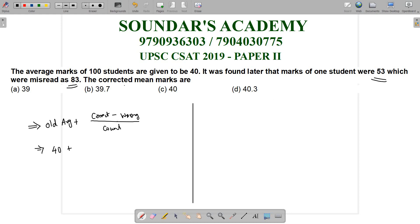40 plus 53 minus 83 divided by 100. 40 minus 0.3 is the answer, 39.7, option B. Answer is option B. This is one method.